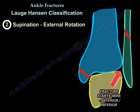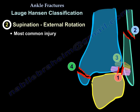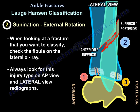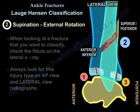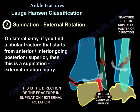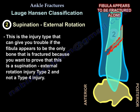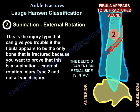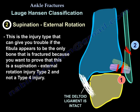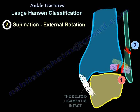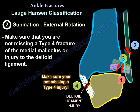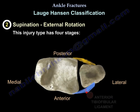The second type is supination-external rotation injury — the most common injury. To identify it, look at the lateral X-ray. When you see an ankle fracture you want to classify, always look at the fibula on both the AP and lateral radiographs. If you find the fracture going from anterior-inferior to posterior-superior, that is a supination-external rotation injury. This injury has four stages.